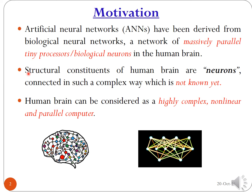These neurons are connected in such a way that is really very complex and not yet fully known. However, the working of our brain is actually very simple — we receive input, do some processing, and get some output. The human brain can be considered as a highly complex, nonlinear, and parallel computer, as shown in this basic figure.